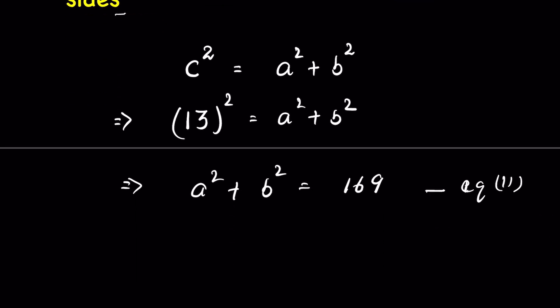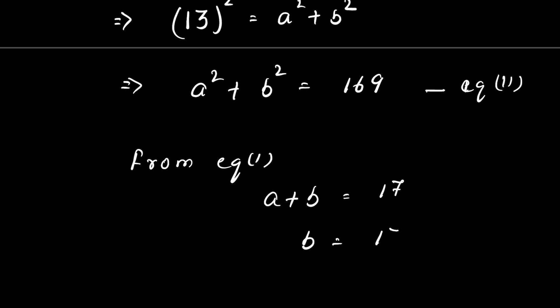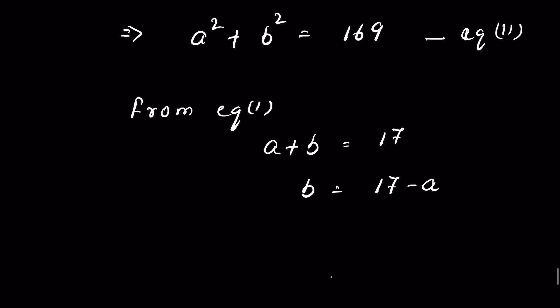From equation 1, a + b = 17, so we can write b = 17 - a. Let's substitute this into equation 2.